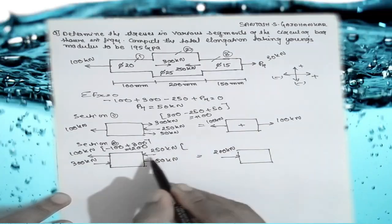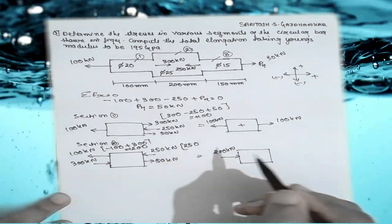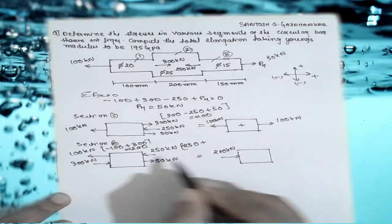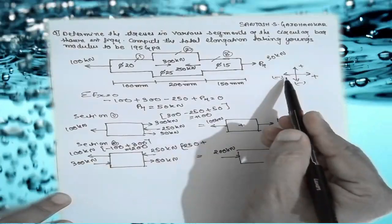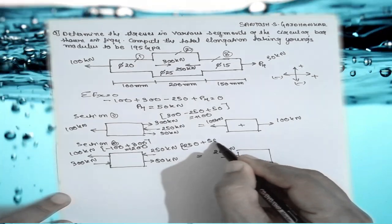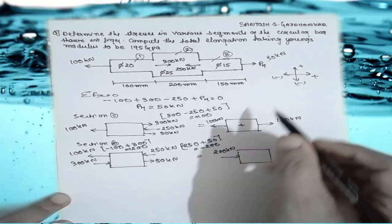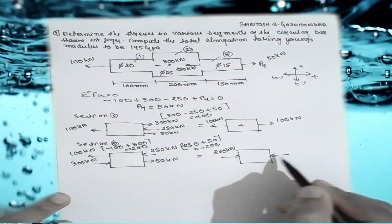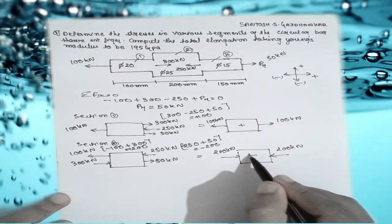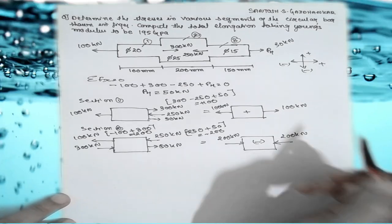For the right face of section 2: minus 250 plus 50 gives minus 200. The minus sign indicates the arrow points inward, so 200 kN acts in compression. Both faces give 200 kN, confirming this is a compressive force of 200 kN.